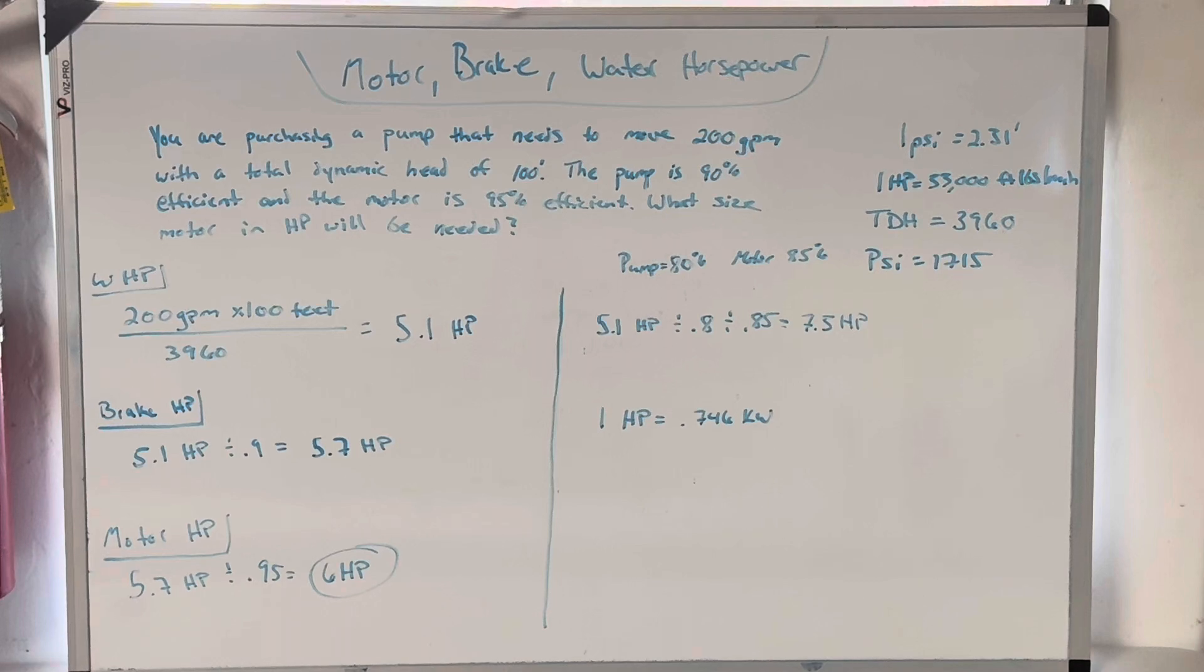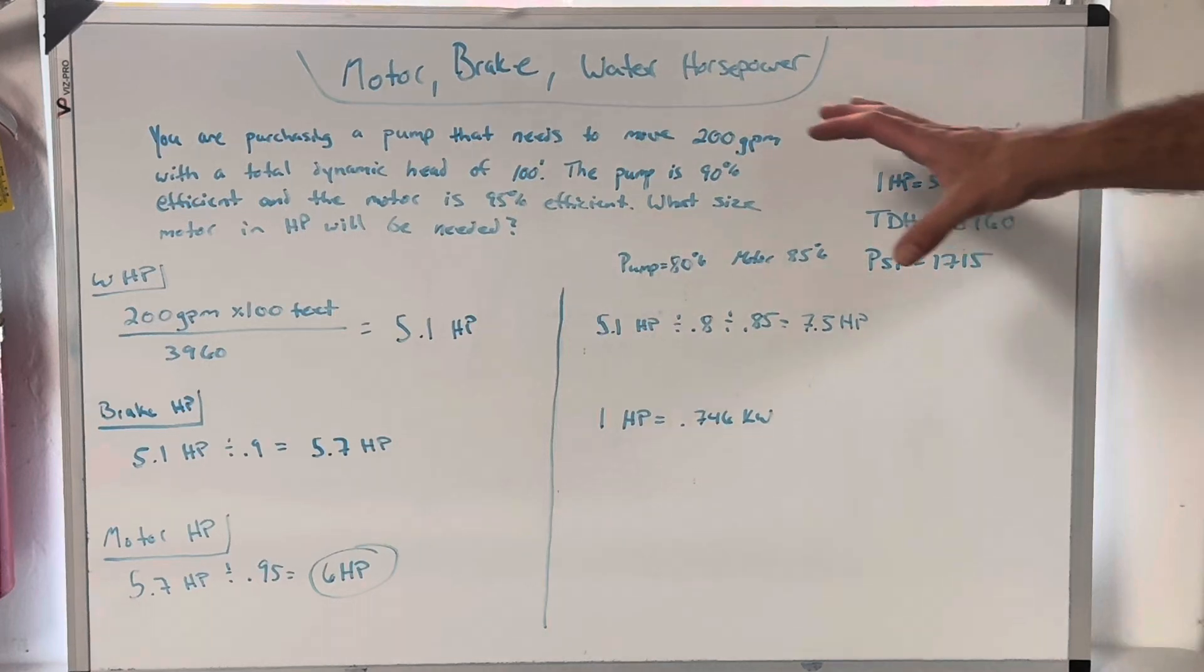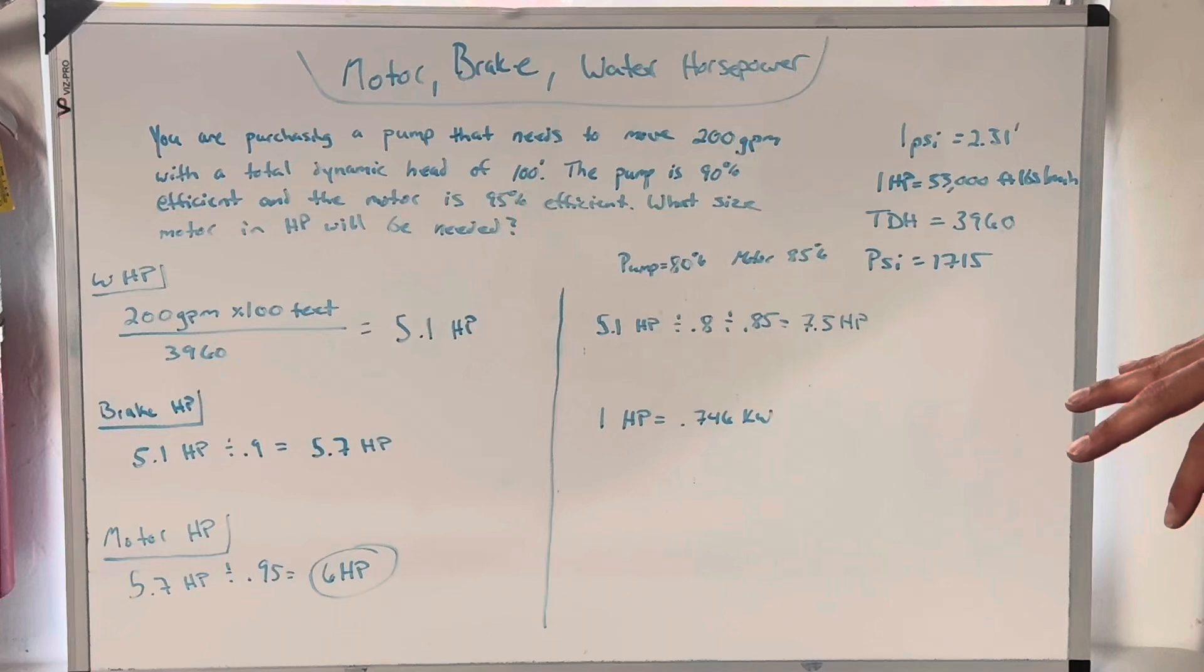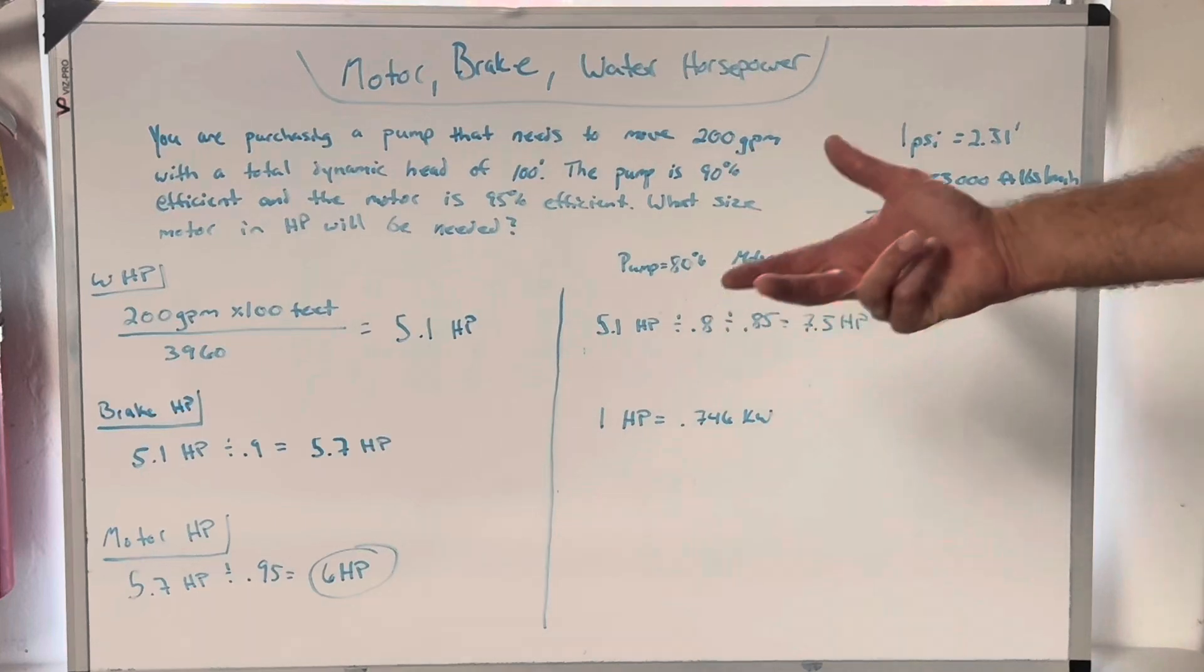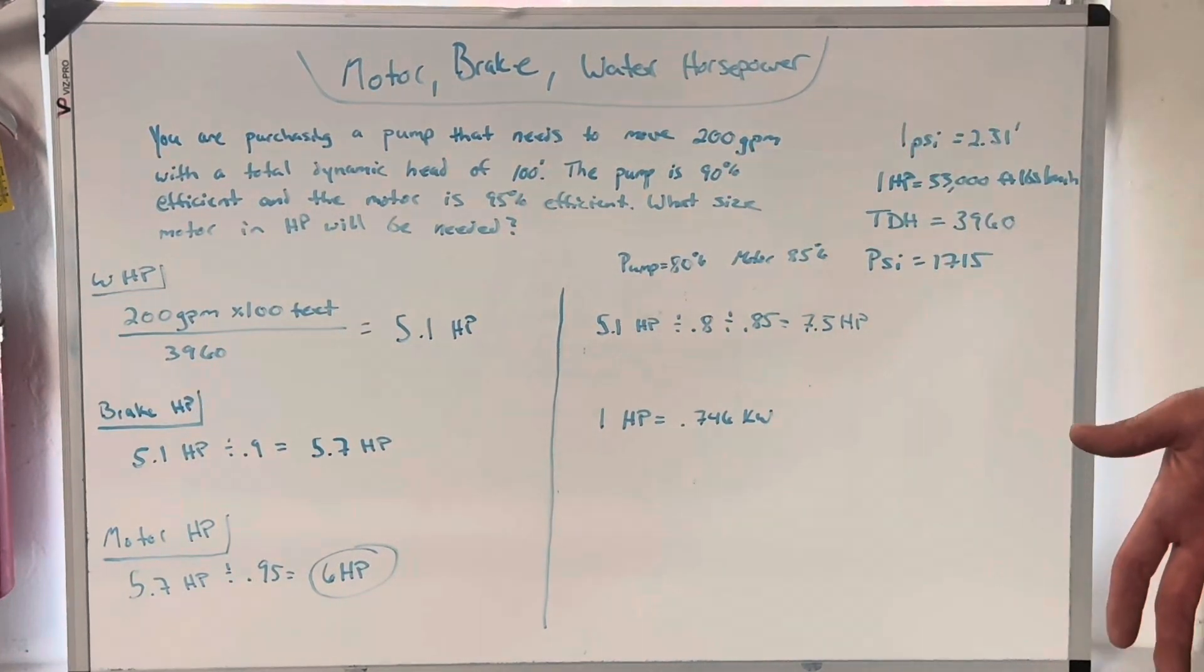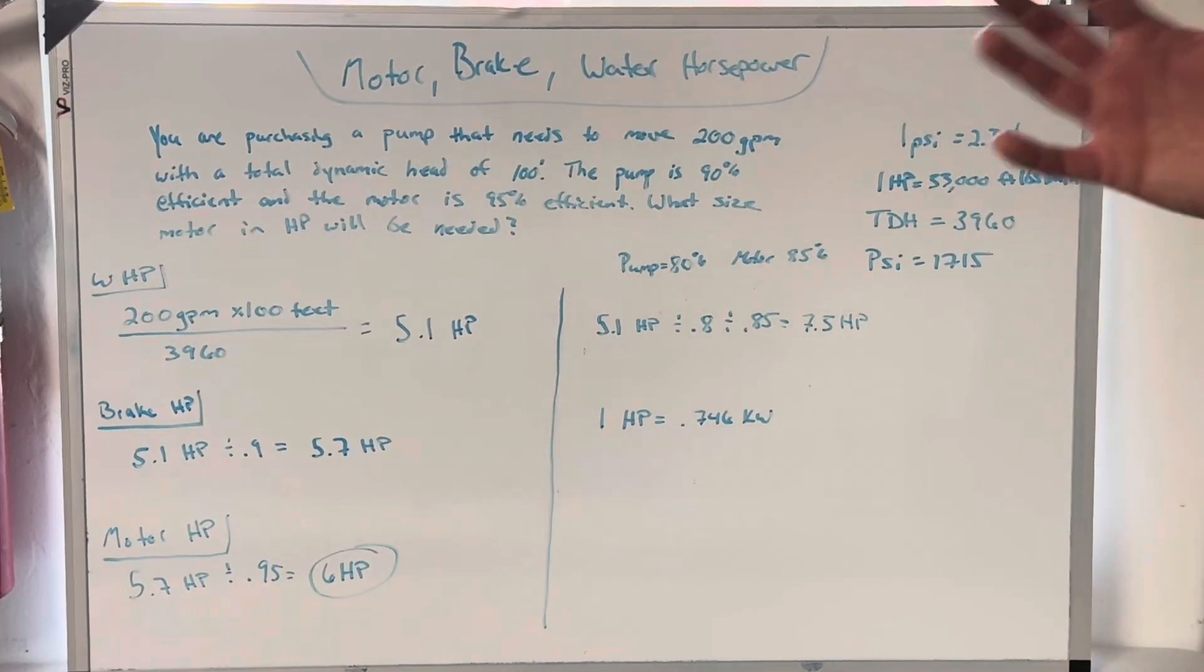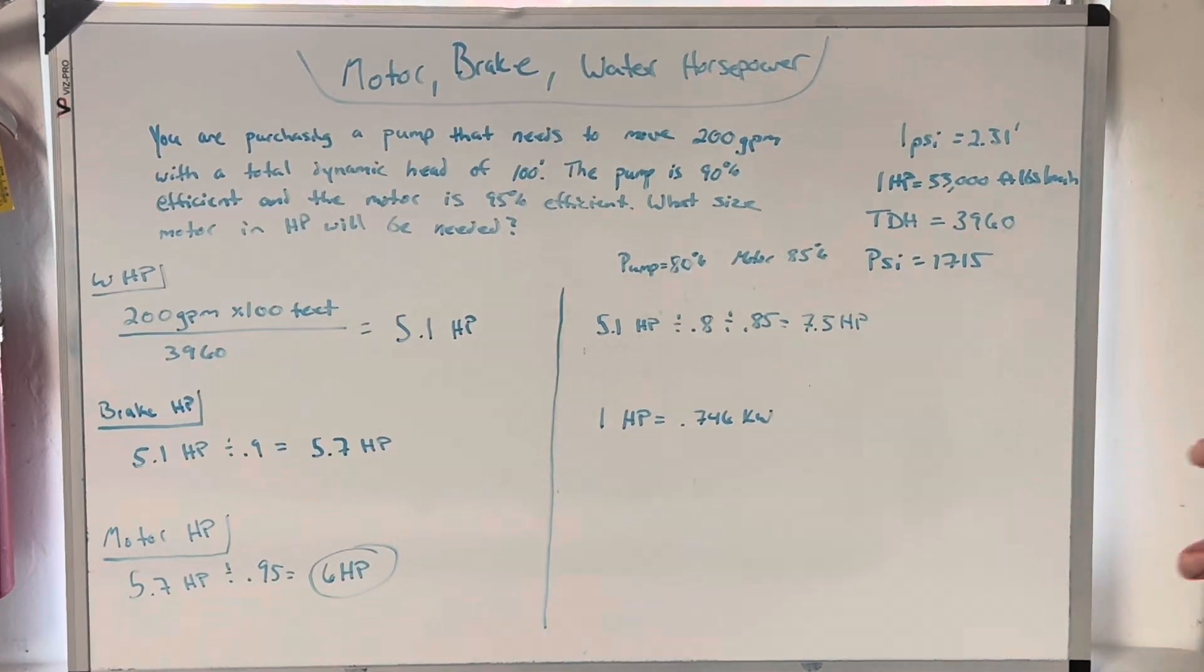So what I've done here is I've created this math equation where we're going to actually be specking out a pump and we're going to have to decide how big a pump we need to put in. Now the other thing is, you may get it the opposite way where they give you that pump is got this much horsepower and you have to go figure out the water horsepower based off of pump and motor efficiency. You just do it reverse of what I'm going to show you. And I'll point out what that reverse is here in a minute.